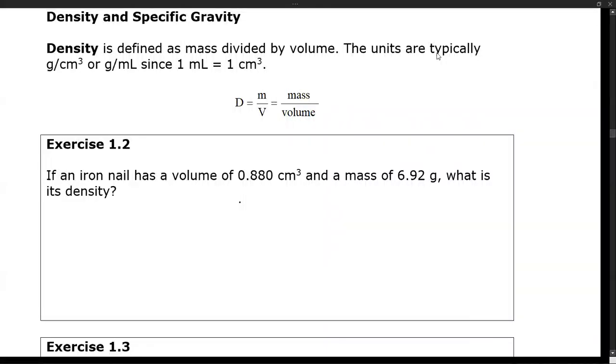Okay let's talk about density and specific gravity. Density is defined as the mass divided by the volume. The units will usually be something like grams per cubic centimeter or grams per milliliter since one milliliter equals one cubic centimeter.